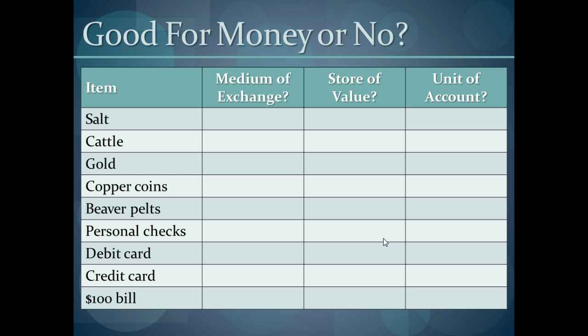For illustrative purposes, let's look at a couple of examples. If you're talking about something like salt, which has been used in the past as a form of trade — does it serve as a medium of exchange? In today's world, no, no one accepts salt for the purchase of goods and services. Is it a store of value? No, salt degrades over time and gets ruined if it gets wet. Is it a unit of account? Are prices expressed in terms of salt? No. So salt is no longer a form of money, where it might have been in the past.